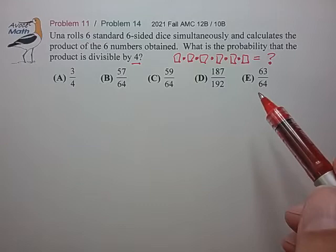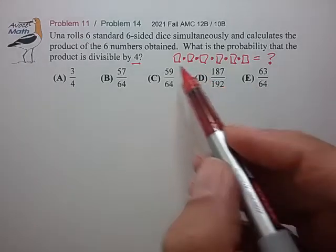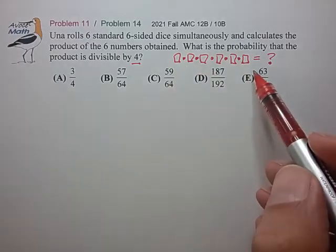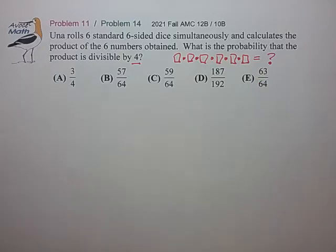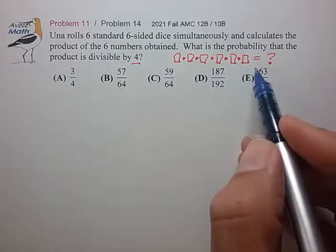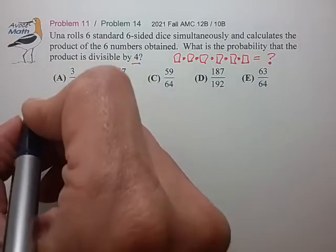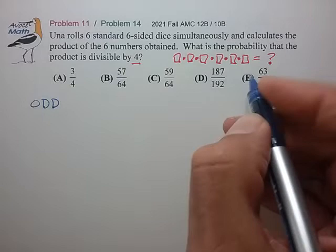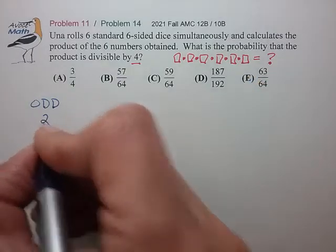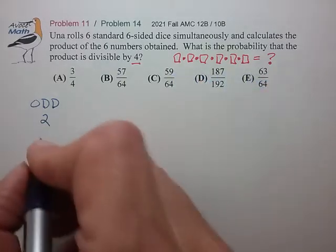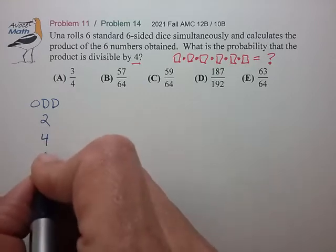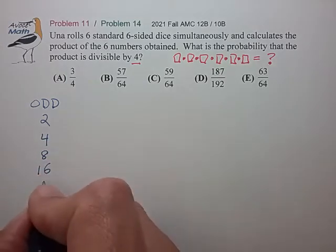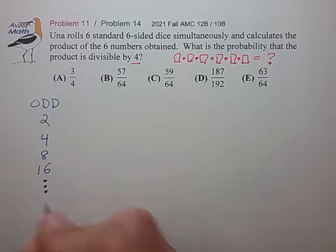It seems like we'll have to keep track of how many factors of 2 appear in this product. Let me list the possible outcomes. If all the dice are odd, then the product will be odd. This product could contain one factor of 2, two factors of 2, three factors of 2, four factors of 2, and so on.